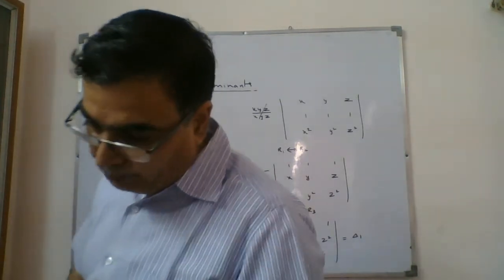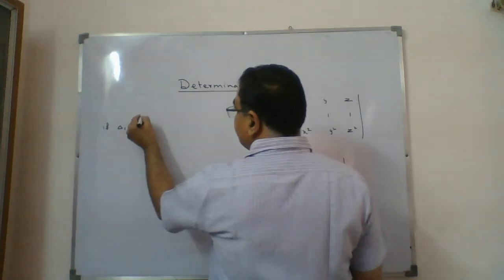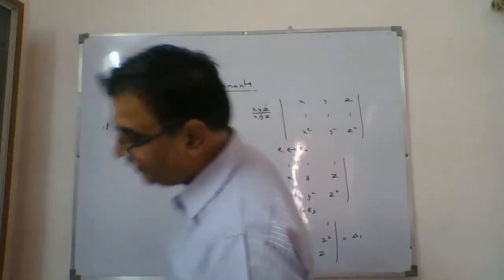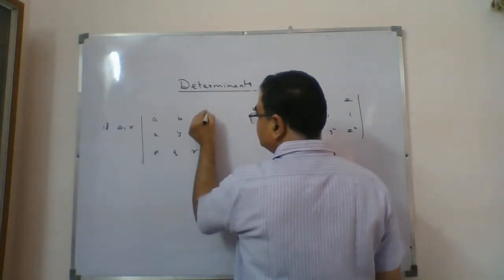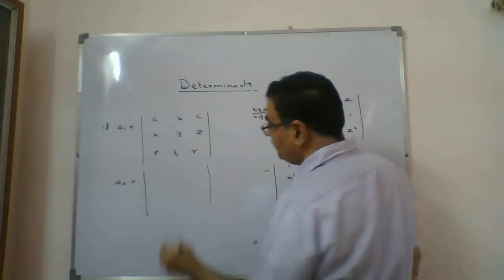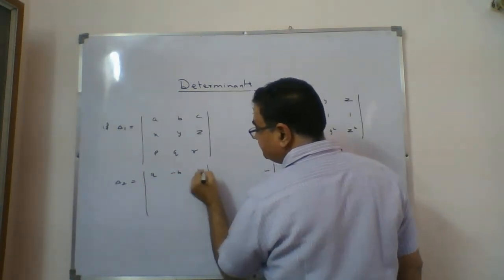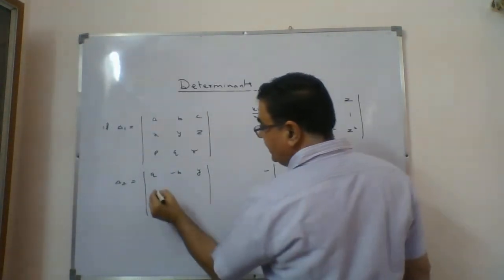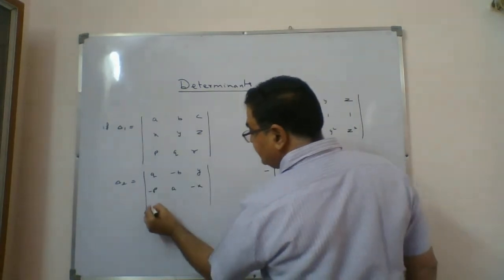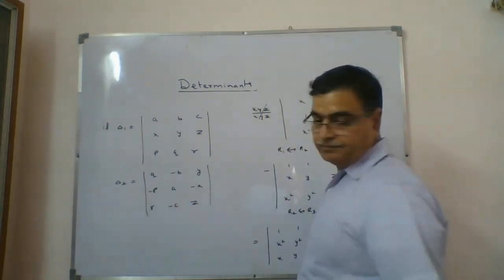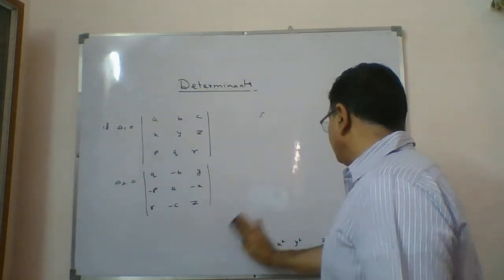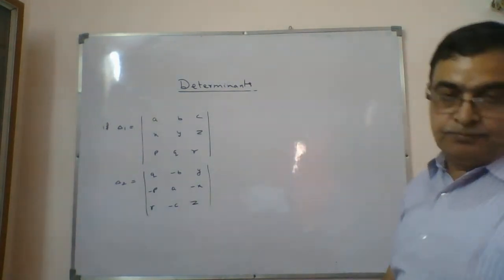If delta 1 is the determinant with rows a, b, c; x, y, z; p, q, r — and delta 2 is the determinant with rows q-b, y; minus b, a-b, a-x; and r-c, z — then the question is: prove that delta 1 equals minus of delta 2.